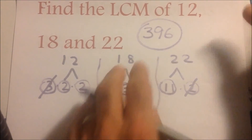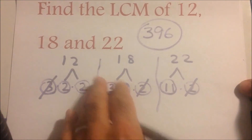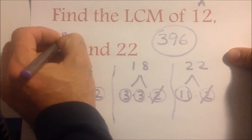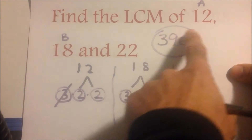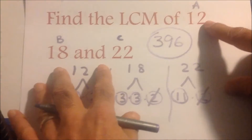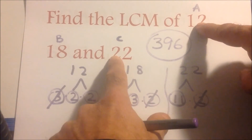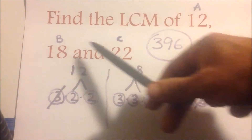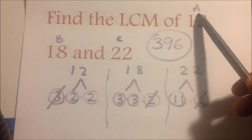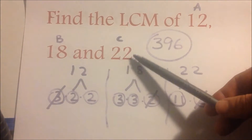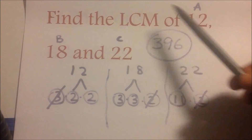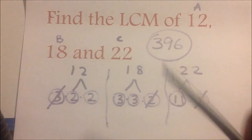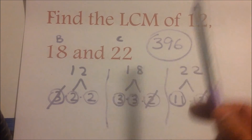Here's a scenario using those numbers. Bus A leaves the station and comes back every 12 minutes, Bus B every 18 minutes, and Bus C every 22 minutes. If they all left at 9 a.m., when will all three be at the station at the same time again? The LCM tells us: in 396 minutes, which is six hours and 36 minutes.